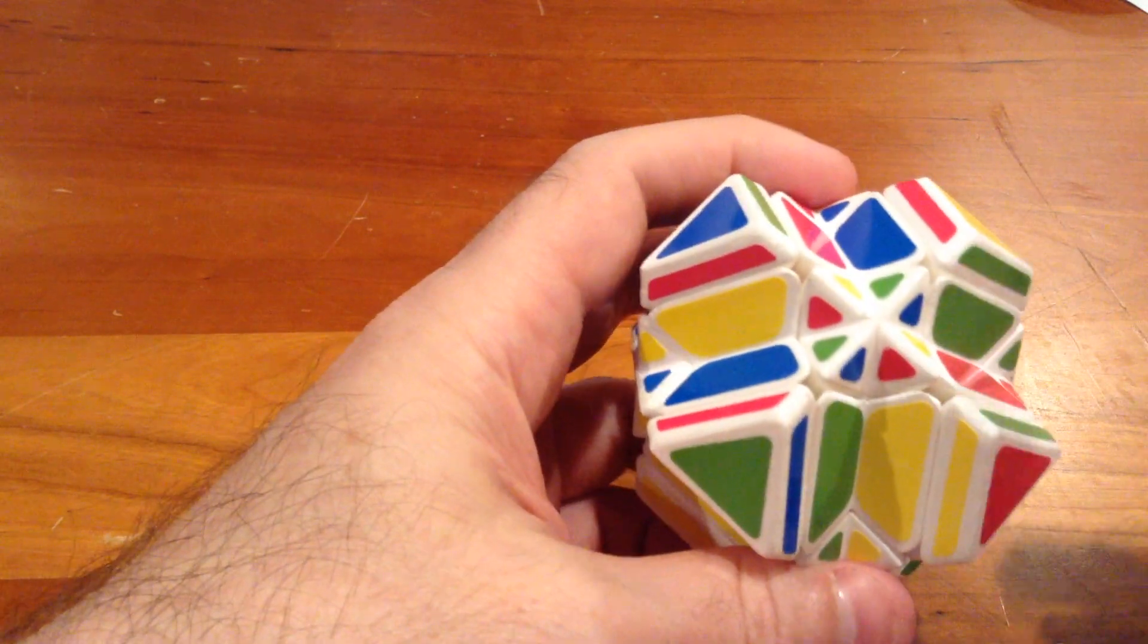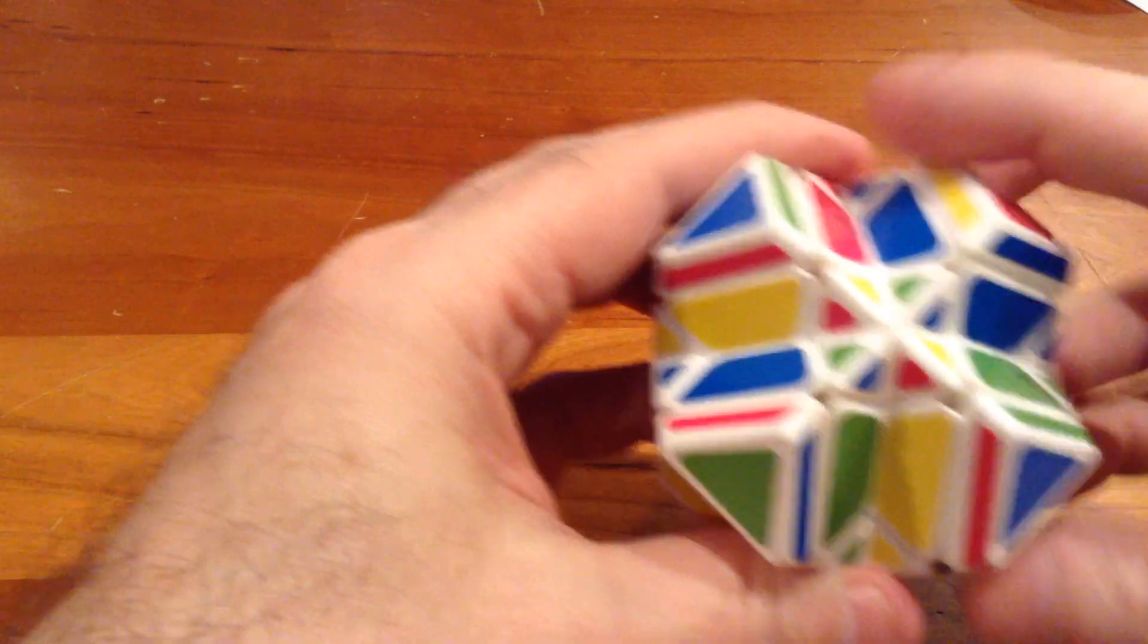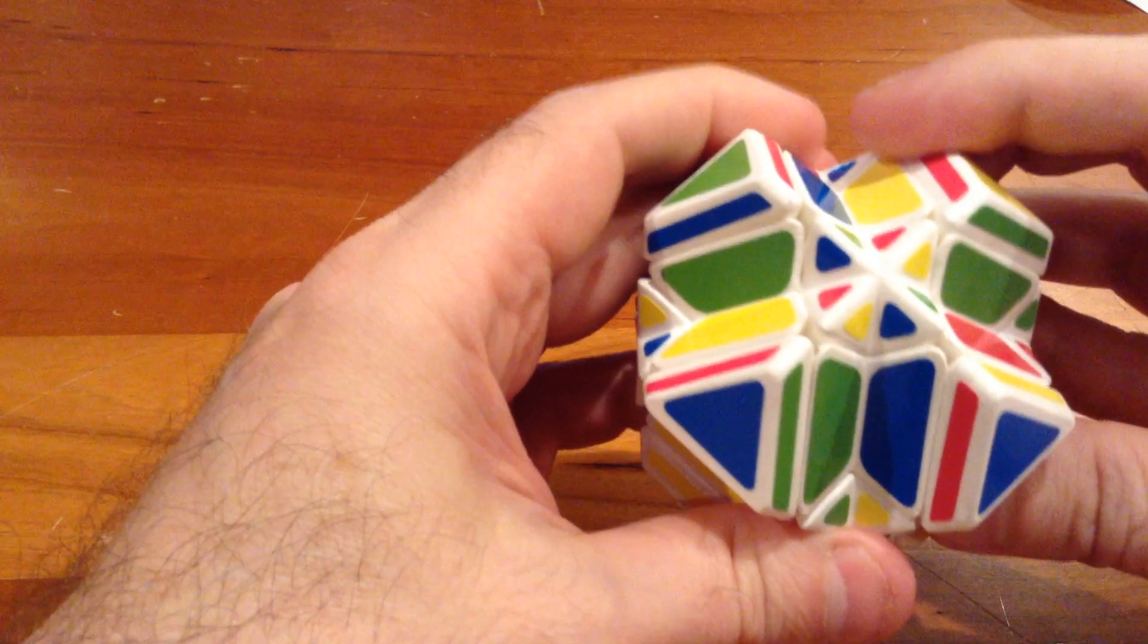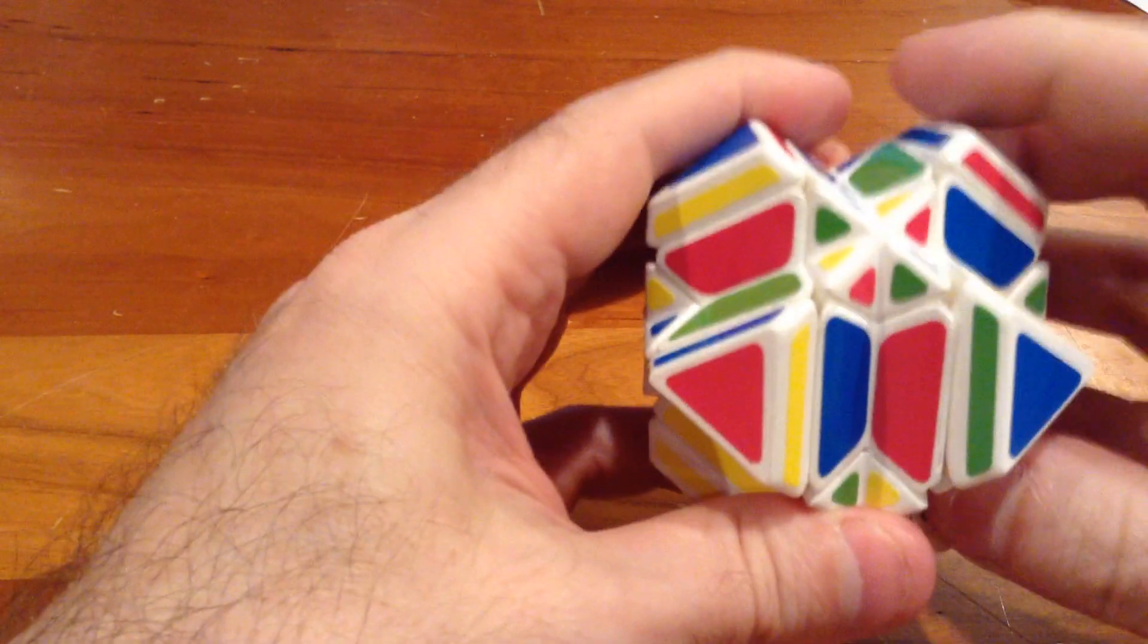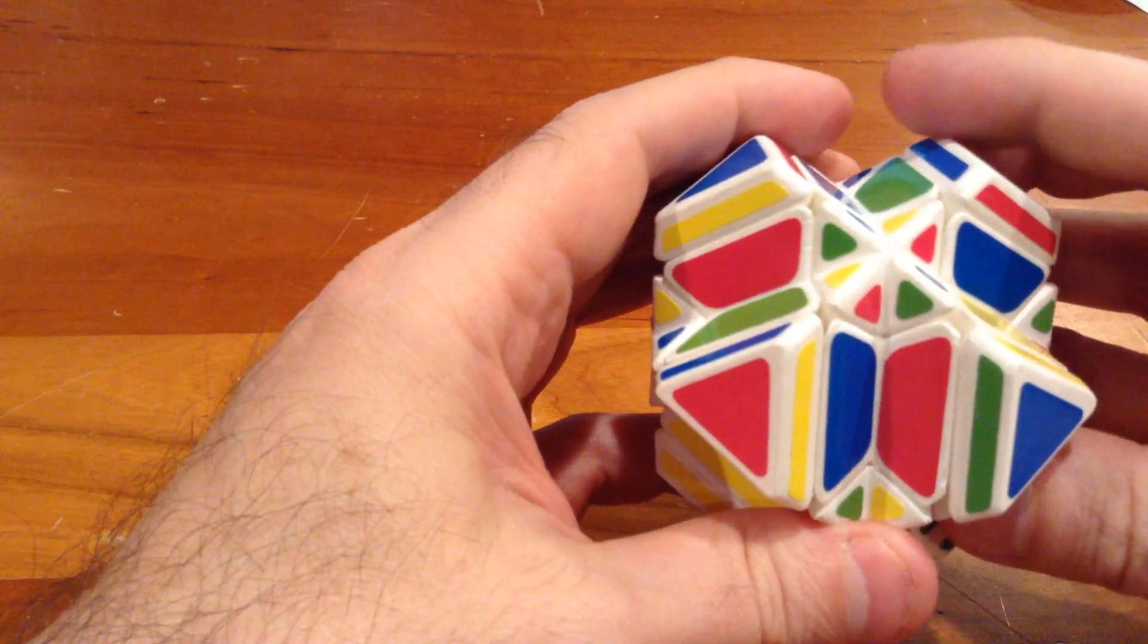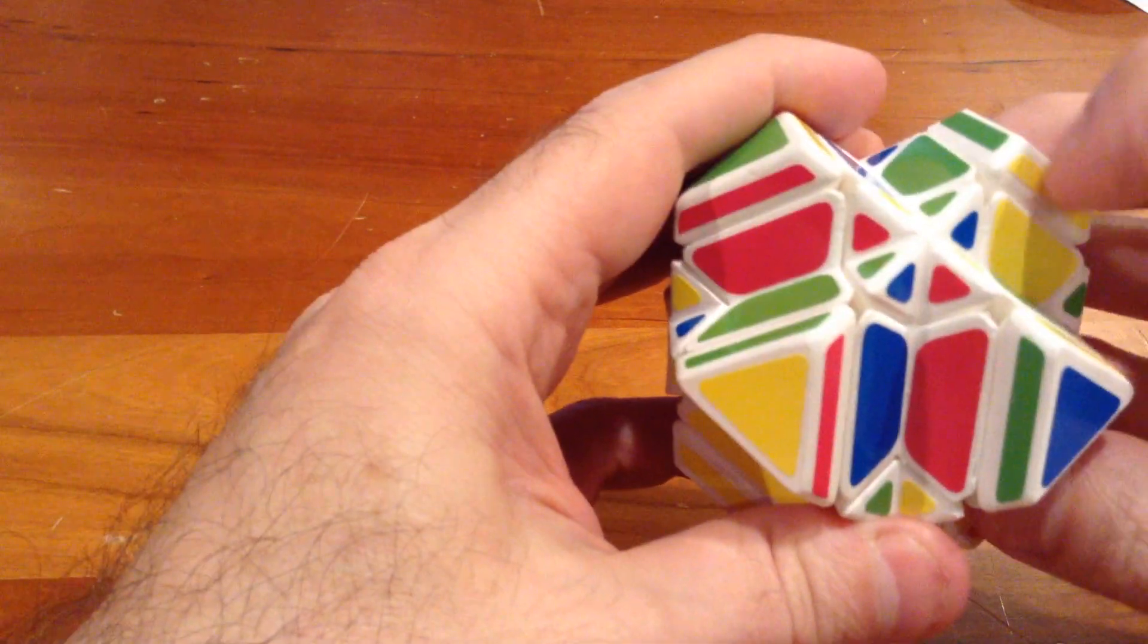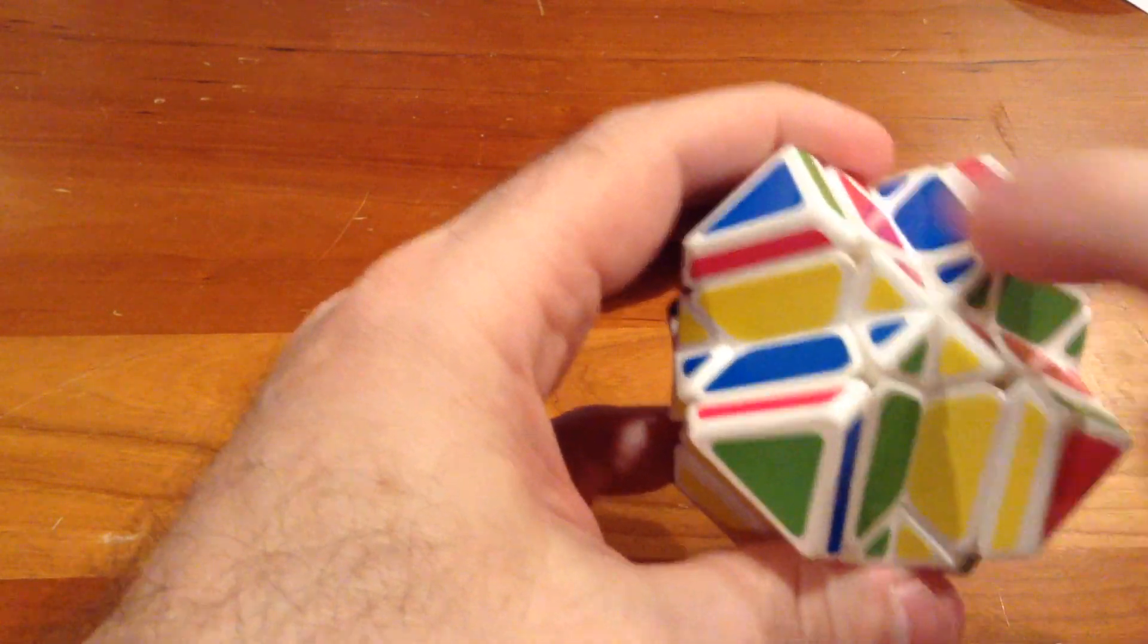But this is easy. We're just going to rotate that 180 degrees. And the algorithm for that is R, U, R', U. And we're going to do that five times. So two, three, four, five. And now our center is correct.